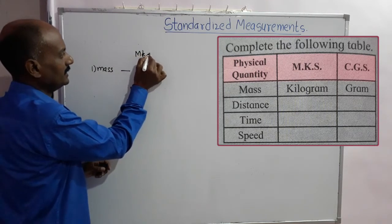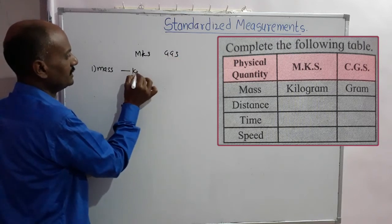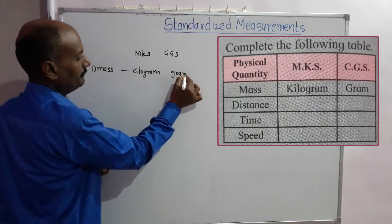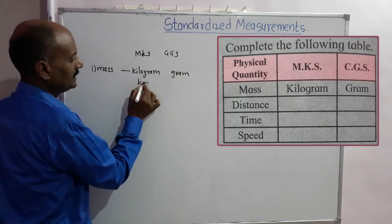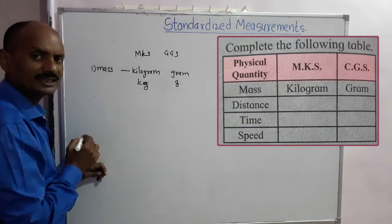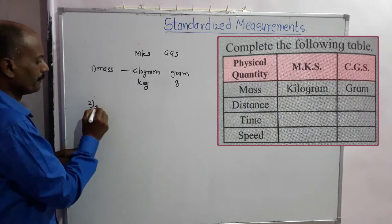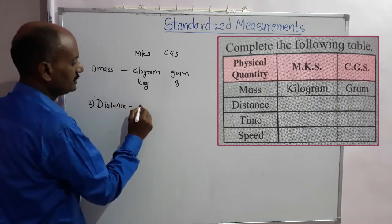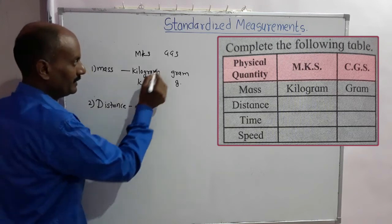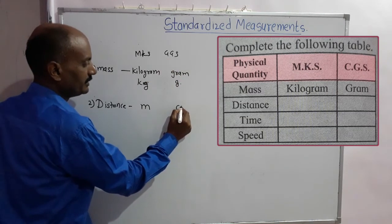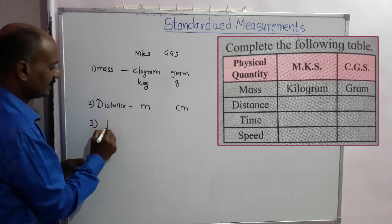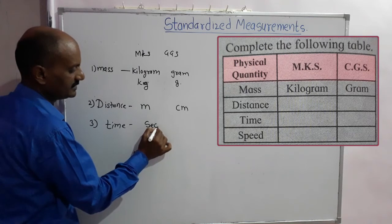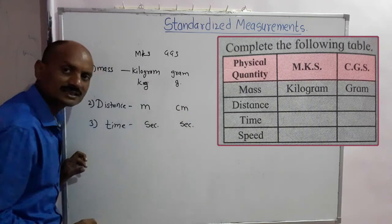In the MKS system, mass is measured in kilogram (kg). In the CGS system, mass is measured in gram (g). Distance in the MKS system is meter (m), and in the CGS system it is centimeter (cm). Time in both the MKS and CGS systems is measured in second (s).